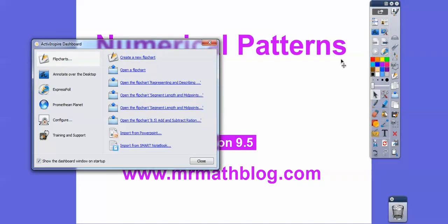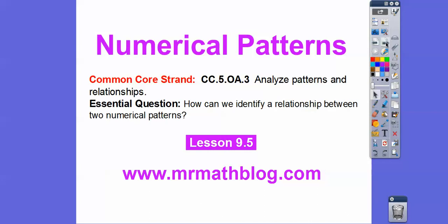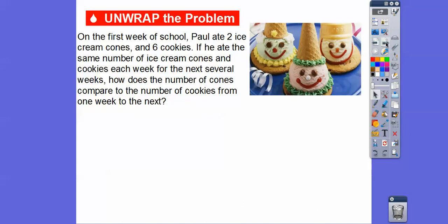Here's our common core strand for our teachers, and our question is: how can we identify a relationship between two numerical patterns? We're going to start with ice cream cones and cookies. On the first week of school, Paul ate two ice cream cones and six cookies. If he ate the same number each week for the next several weeks, how does the number of cones compare to the number of cookies from one week to the next?